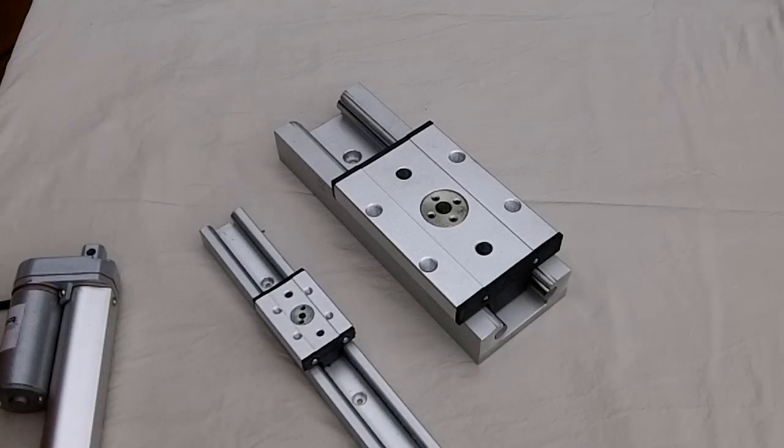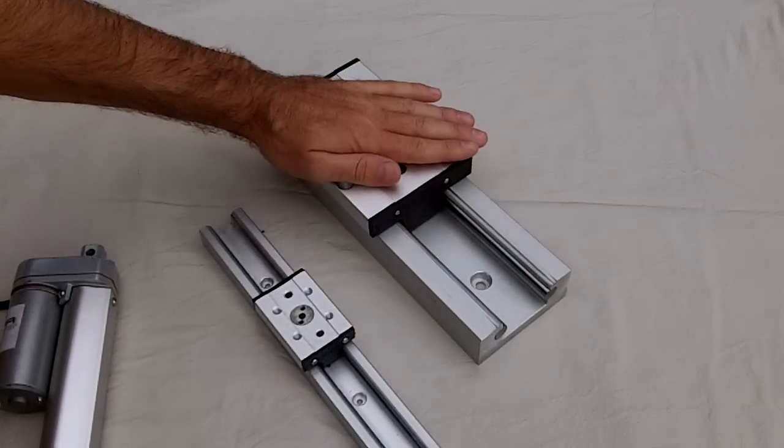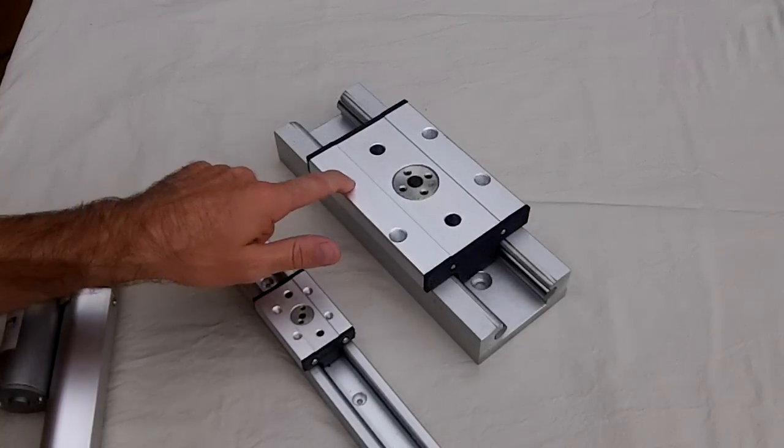These are the new Fergeli Automation linear slides, or linear guides as they are sometimes called. This is a heavy-duty one. This can carry about 700 pounds of force, and as you can see, it requires very little force to make these things move up and down.